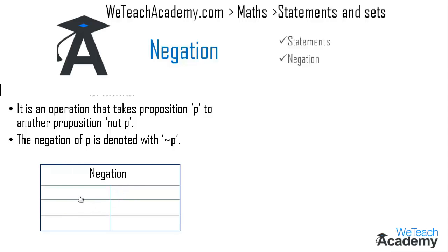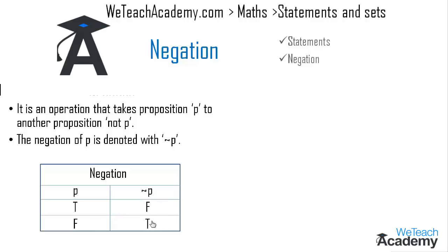Here we have two columns: the first column gives the truth value for p and the second column gives the truth value for not p. If p is a true statement then the truth value for not p would be false, and if p is a false statement then the truth value for not p would be true.